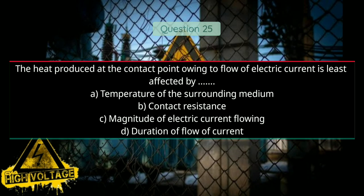Question number twenty-five: The heat produced at the contact point owing to flow of electric current is least affected by — Option A: temperature of the surrounding medium, Option B: contact resistance, Option C: magnitude of electric current flowing, and Option D: duration of flow of current. Answer will be A, temperature of the surrounding medium.